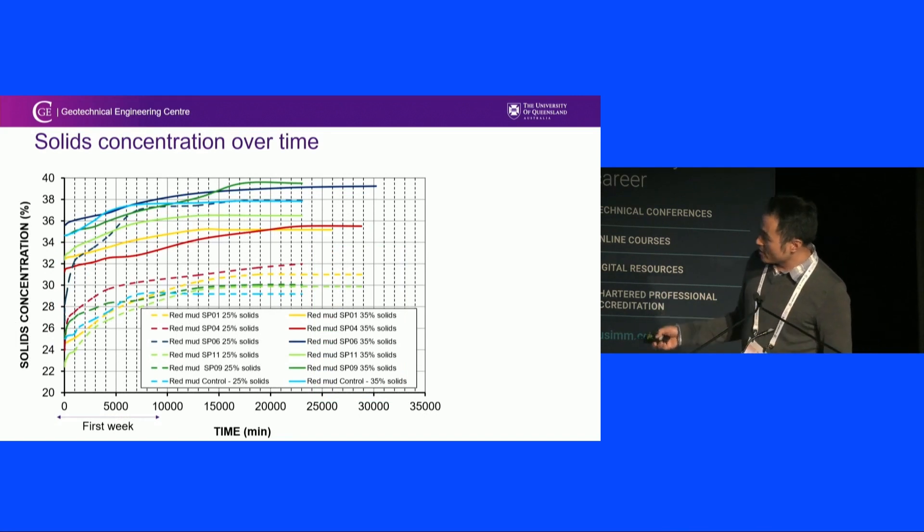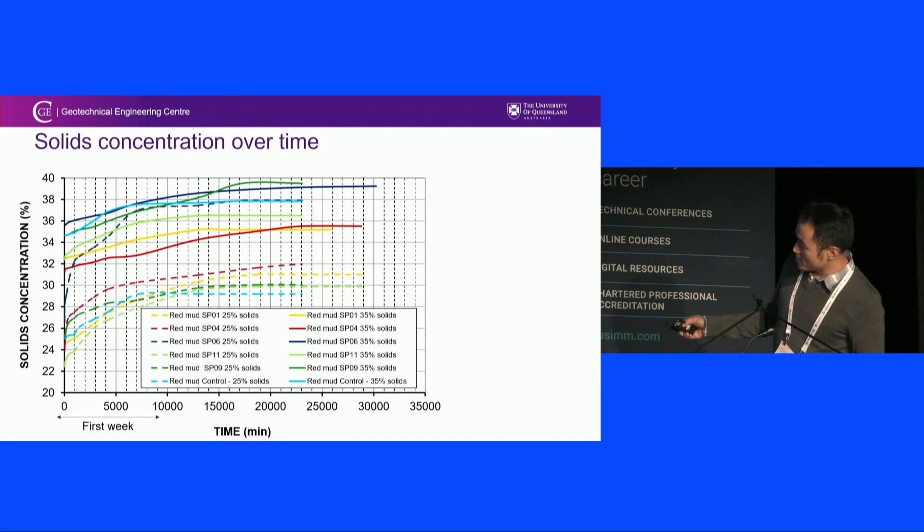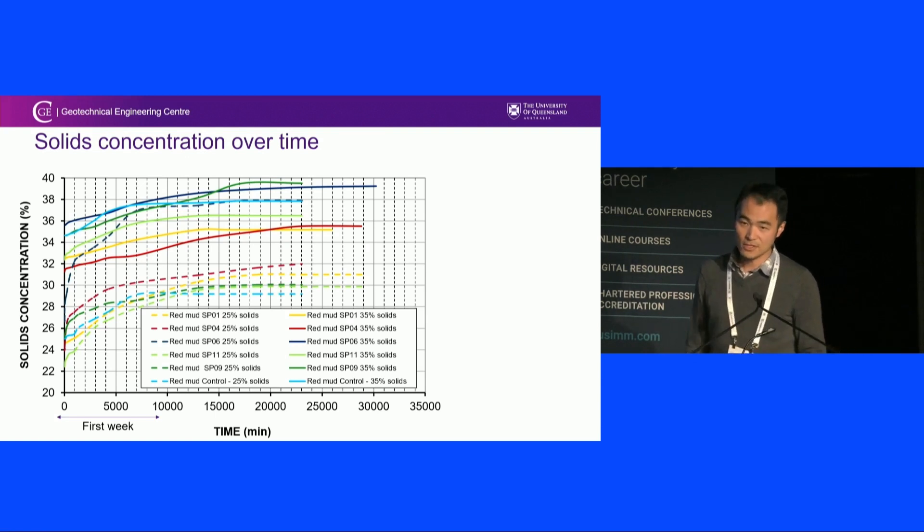We carried out the settling, and to identify what really is the difference, we started to differentiate the samples. We get two groups. One starts with 25% solids, the other starts with 35% solids. And they behave quite similar. Overall, it settles in a week's time. The final solid concentration is around 35% if we start from 25%, and if we start from 35% solids, it ends up around 37%. There is only one that appears to be different. We believe this is not induced by the treatment.